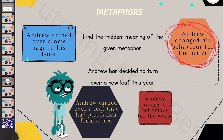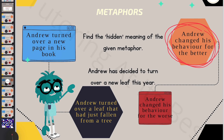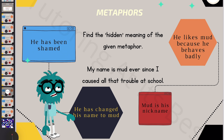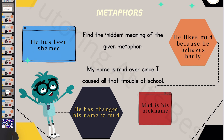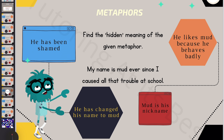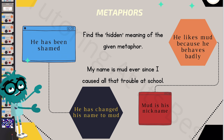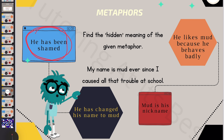If you need to pause the video at any given time, please do so, check your answers and then come back. 'My name is Mudd ever since I caused all that trouble at school.' Well, Mudd is not considered good. So if your name is Mudd, you had better start improving your behaviour — he has been shamed. People are calling him Mudd because of all that trouble he caused at school.